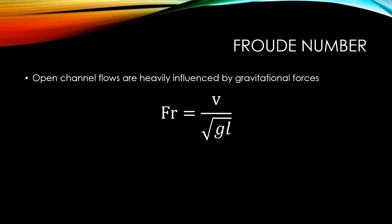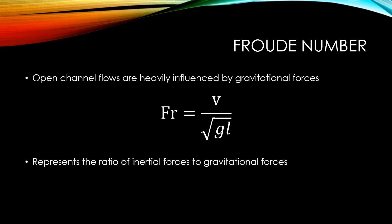The Froude number can be defined as a ratio of inertial forces to gravitational forces. In this equation, the inertial forces are represented by the velocity term in the numerator, and the gravitational forces are represented by the square root of gravitational acceleration times length in the denominator. The velocity usually represents the average velocity along a cross section, and the characteristic length can vary depending on the cross section, but we will go into details on how to calculate that characteristic length in the future.